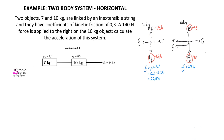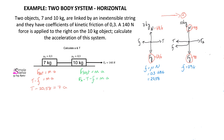The second step in any two-body system is to write a Newton's Second Law expression for each object. For the 7 kilogram object, the net force equals mass times acceleration. The net force is equal to the tension force minus the friction force, assuming the object accelerates to the right, and that equals this object's mass times its acceleration. Tension is unknown, friction is 20.58 newtons, and the mass is 7 kilograms. For the 10 kilogram object, the net force equals mass times acceleration, where the applied force minus the tension force minus the friction force equals the mass times the acceleration.